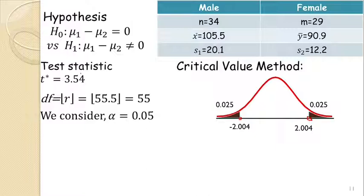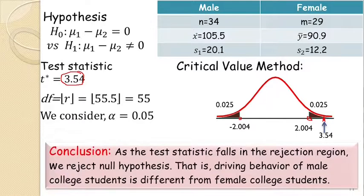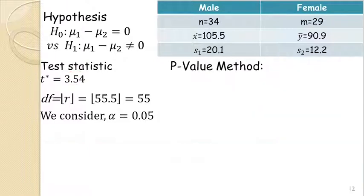Our computed test statistic is 3.54, which lies to the right of 2.004. We can see it falls in the critical region, so we reject the null hypothesis. The conclusion is that the driving behavior of male college students is different from that of female college students.